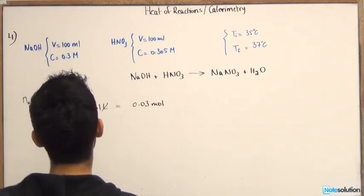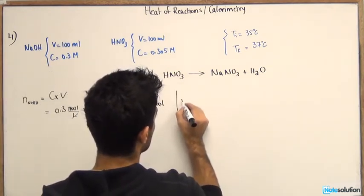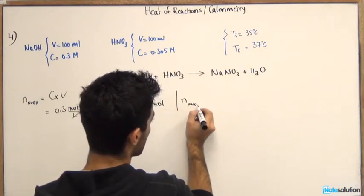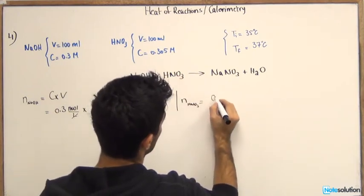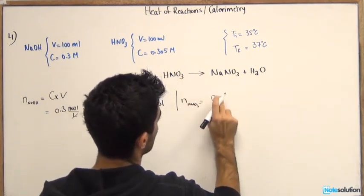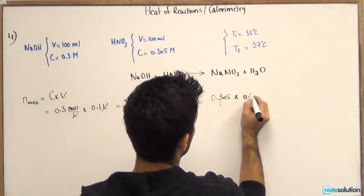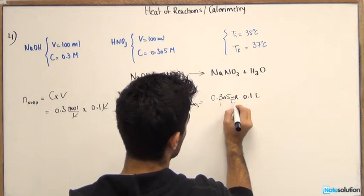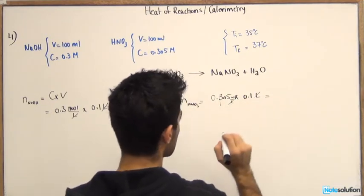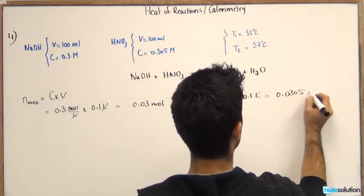So let's see now for the number of moles of HNO3. Number of moles of HNO3 equals concentration again, 0.305 mole per liter times 0.1 liter. Cancels off the liters, you're left with moles. So that would be 0.0305 moles.